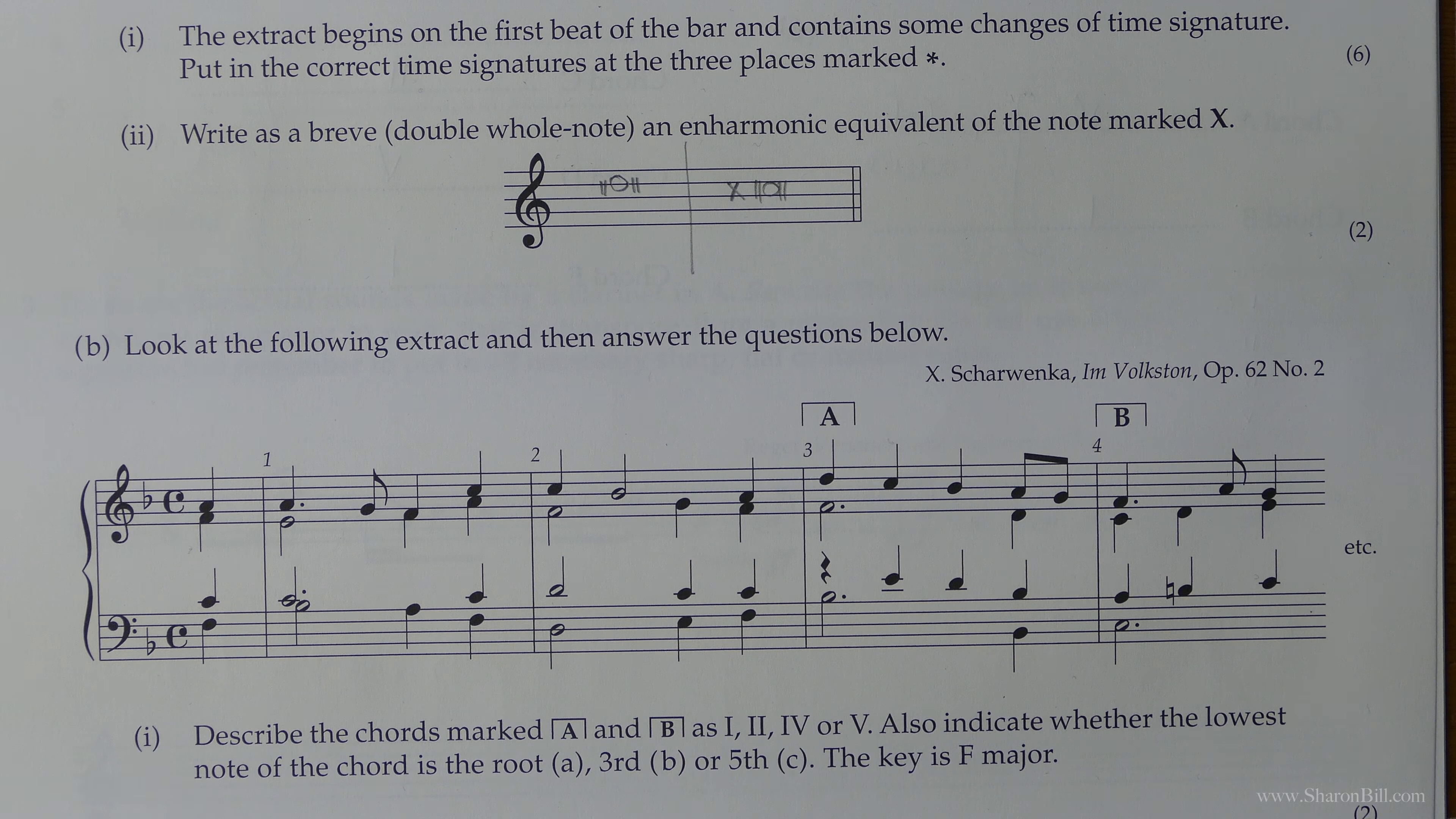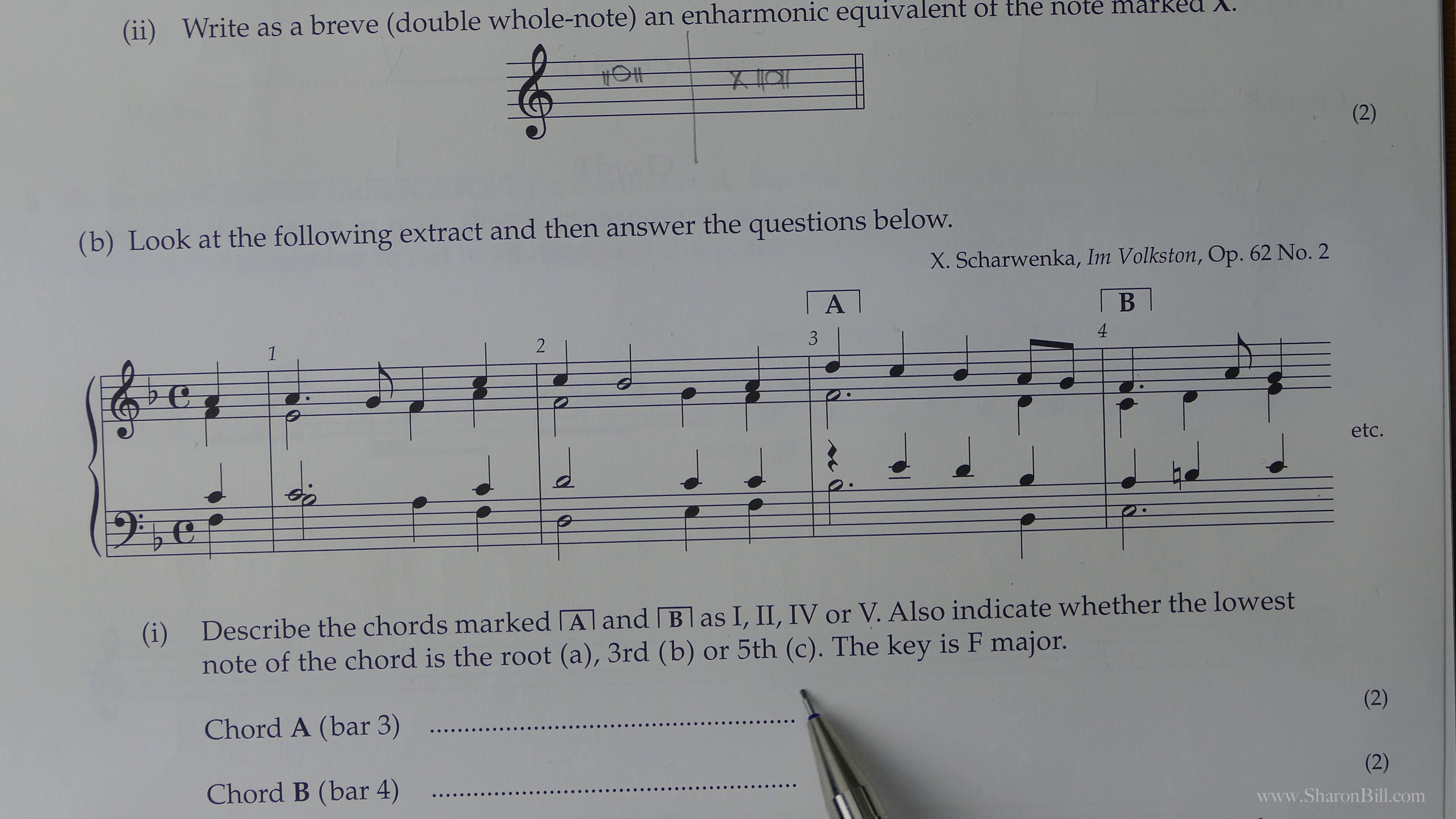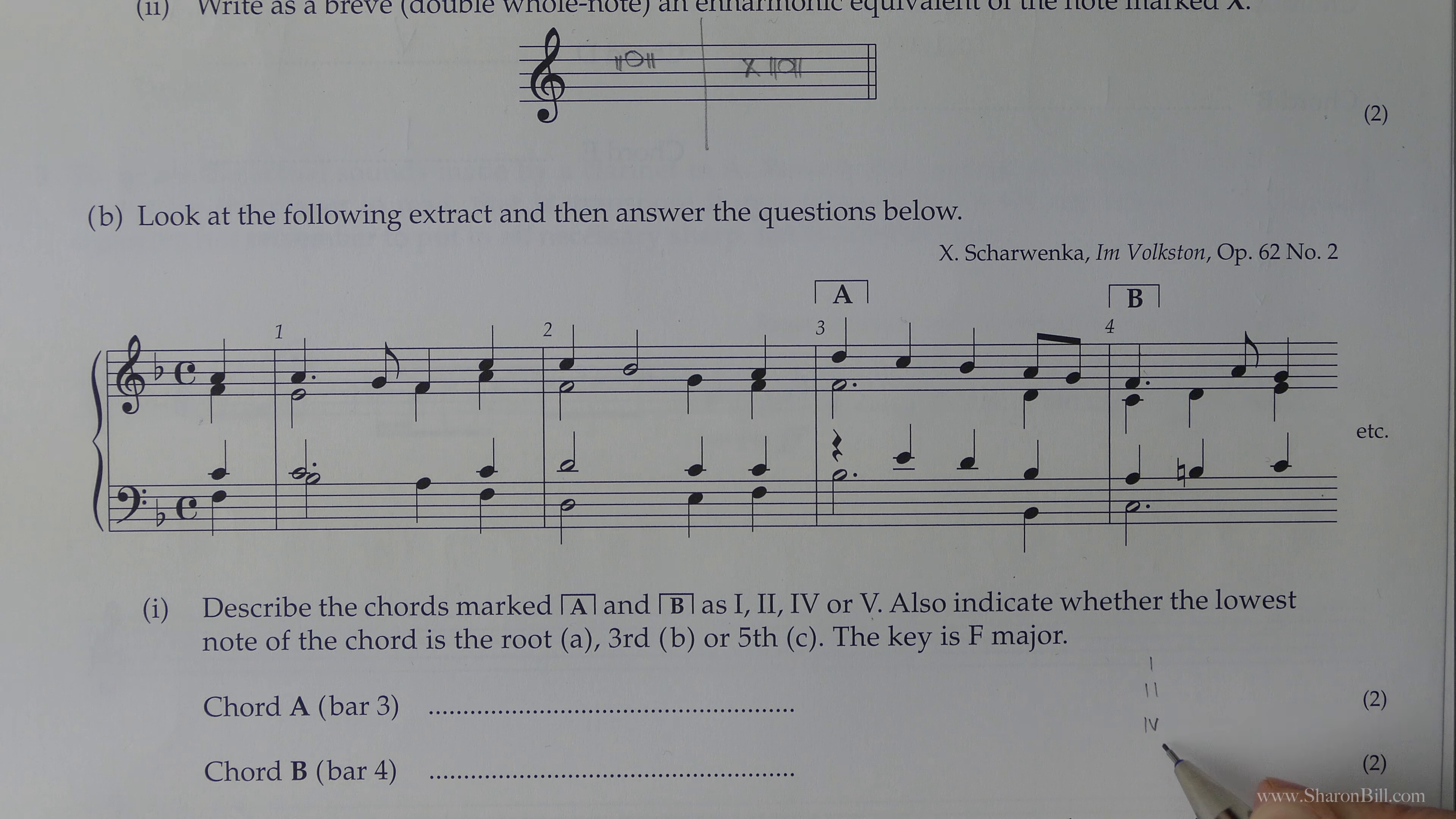So then moving on. Look at the following extract and then answer the questions below. We need to describe the chords here and here marked A and B, and we need to say whether it's chord I, II, IV, or V, and we also need to say which position it's in. We're told helpfully that the key is F major. So let's just map out our choices before we look any further. So chords I, II, IV, and V are the chords that we're going to be looking for.